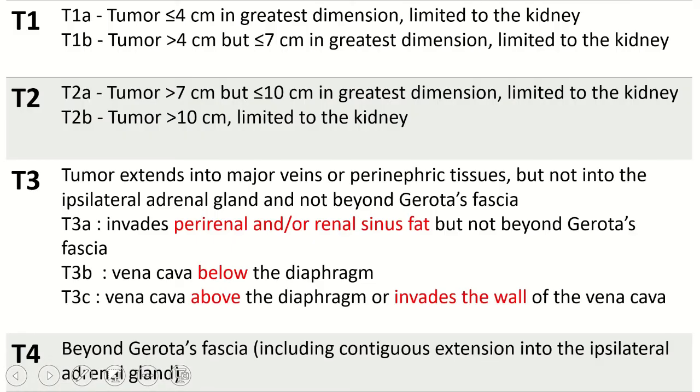Let's see the theory part. As I have already explained, T1 is limited to the kidney and it is just based on the size of the kidney. Less than or equal to 4, 4 to 7. T2a is 7 to 10. T2b is more than 10. It is less than 7 cm. T2 is more than 7 cm.